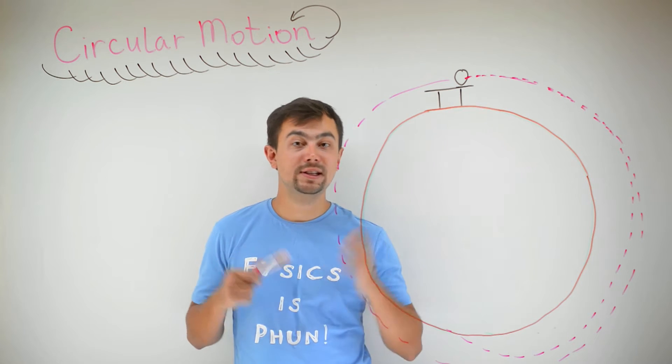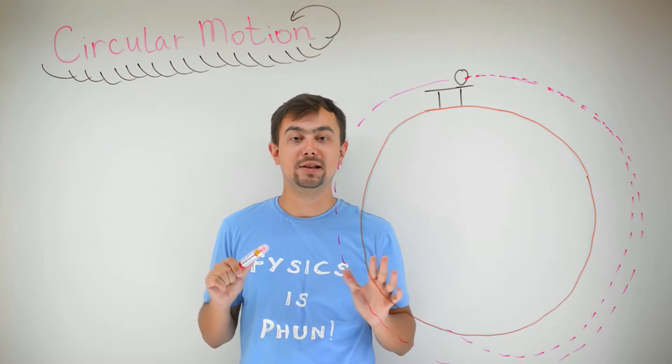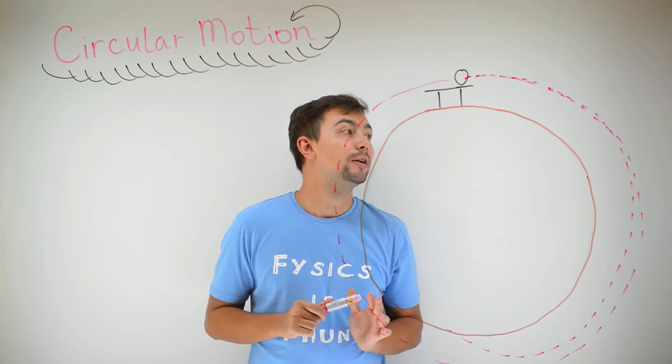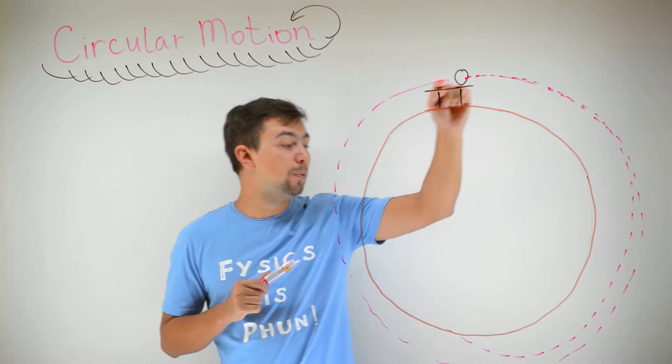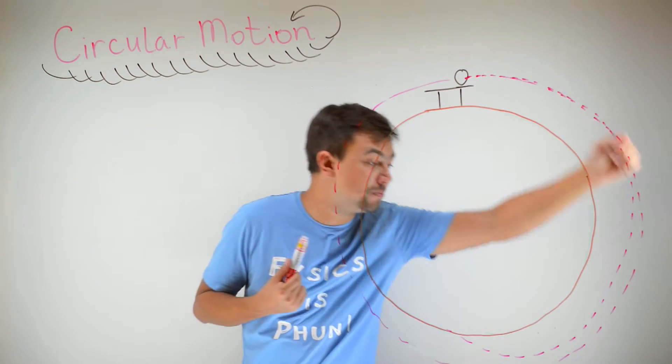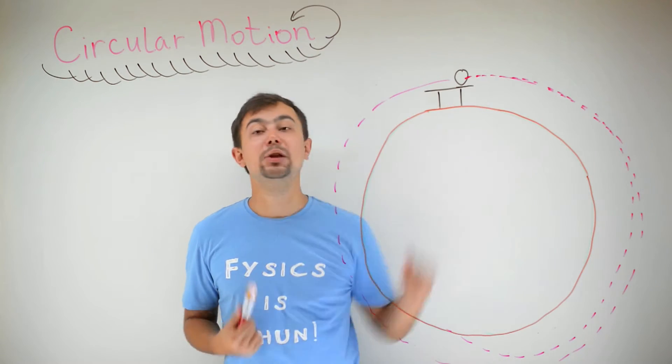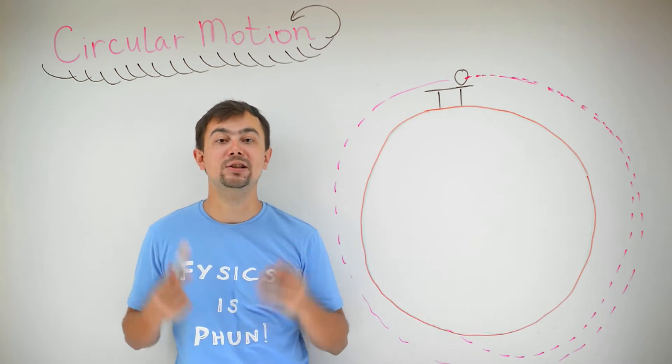Well, the necessary speed for this is around 8 km per second or higher. In this case, the ball returns with the same speed. So it has the energy to make one more circle. And then again, and then again, we say the ball is in orbit.